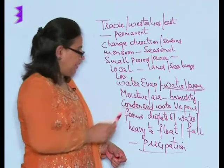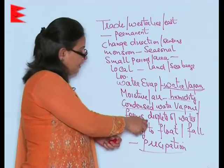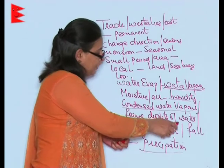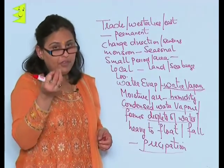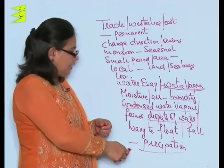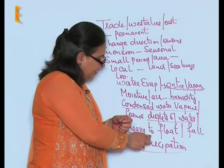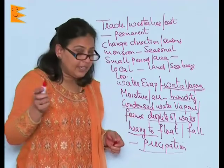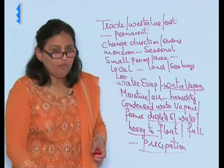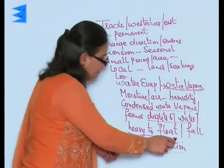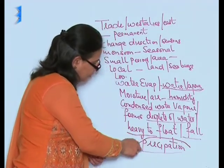When water vapor gets condensed, it forms droplets of water — it takes the shape of droplets of water. When it becomes very heavy and cannot float in the air, it tends to fall down, and when it falls, it is called precipitation.